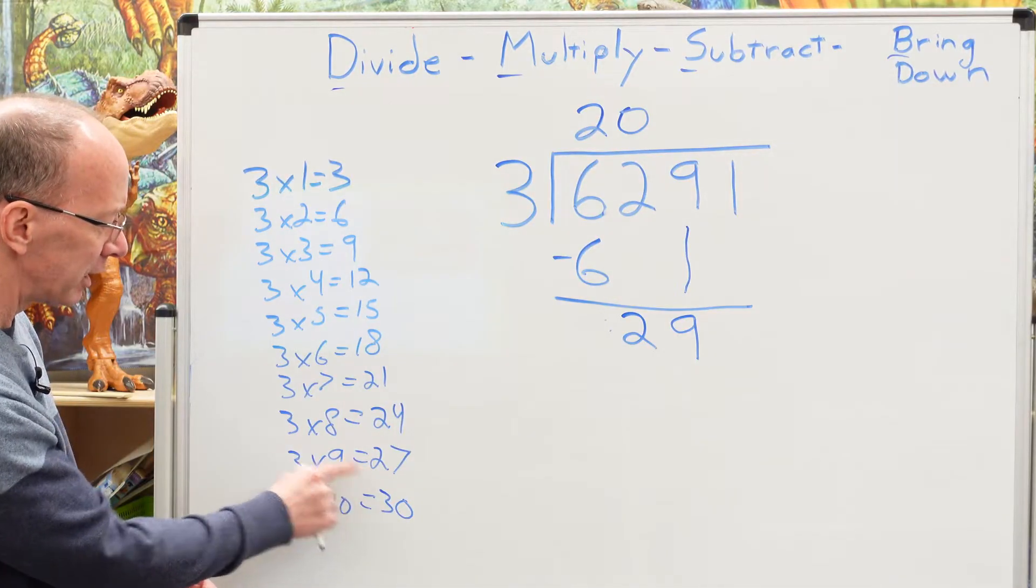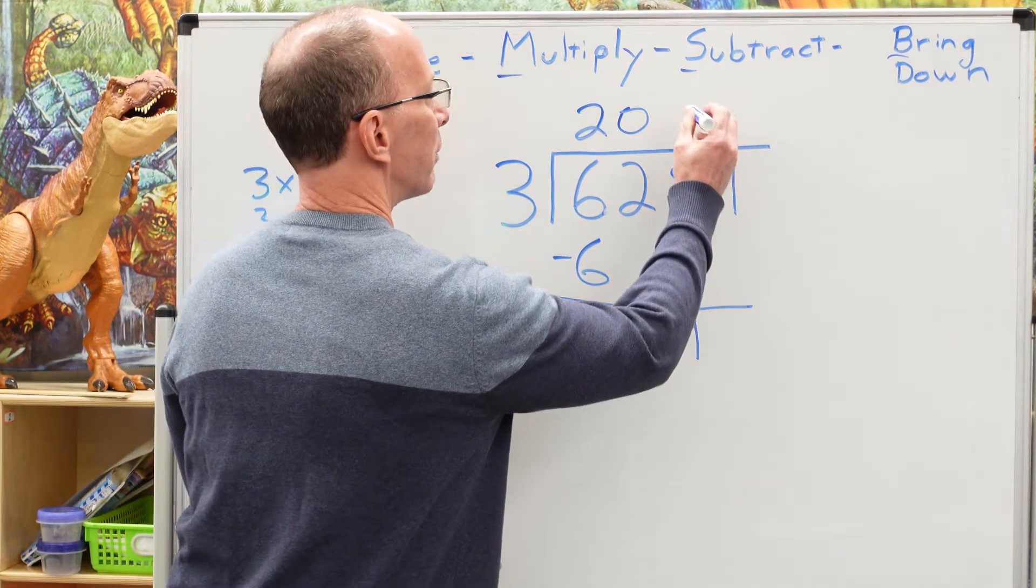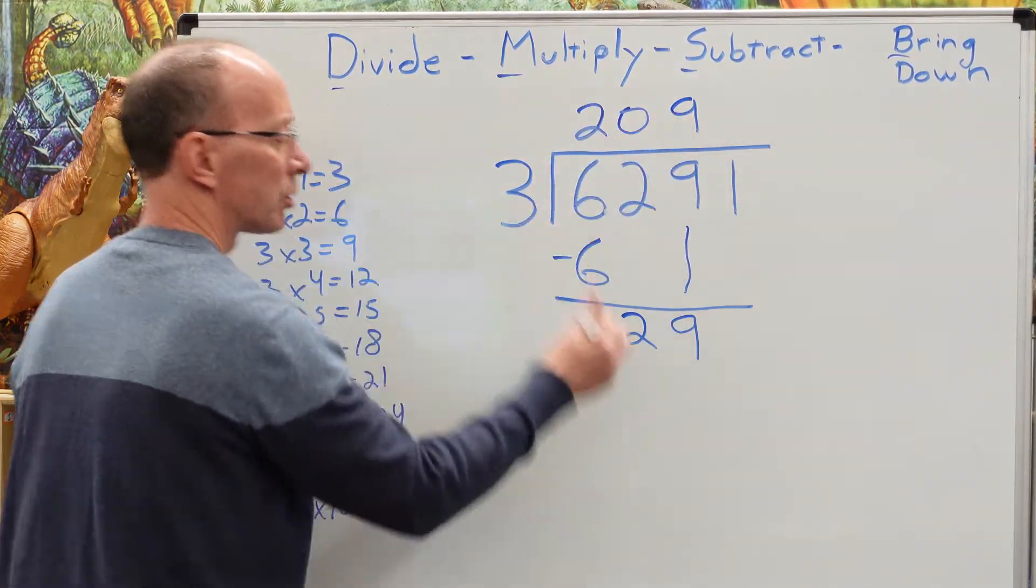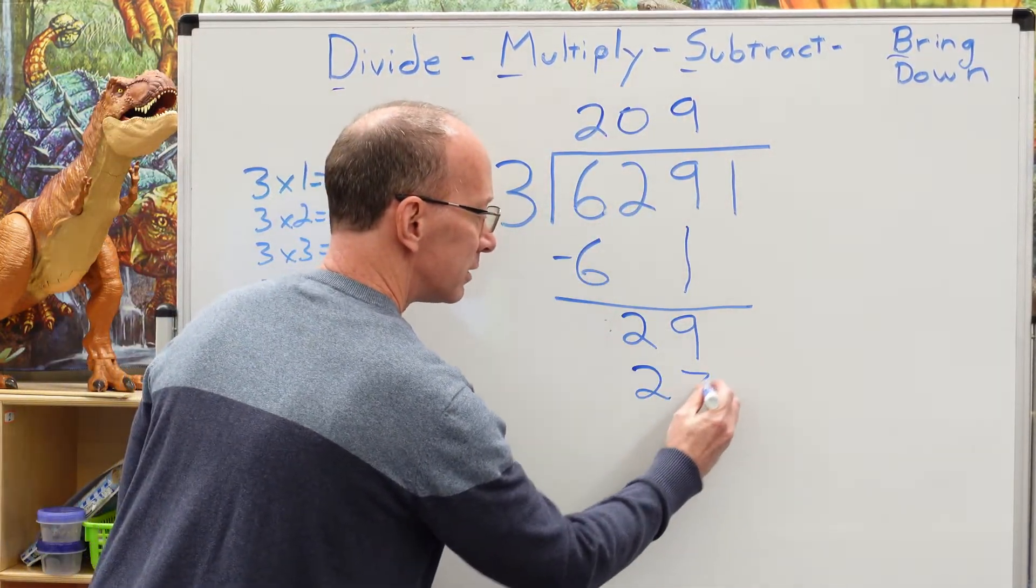It's the 27. Three times nine equals 27. So I'm going to put nine right here. Now I multiply nine times three equals 27 right here.